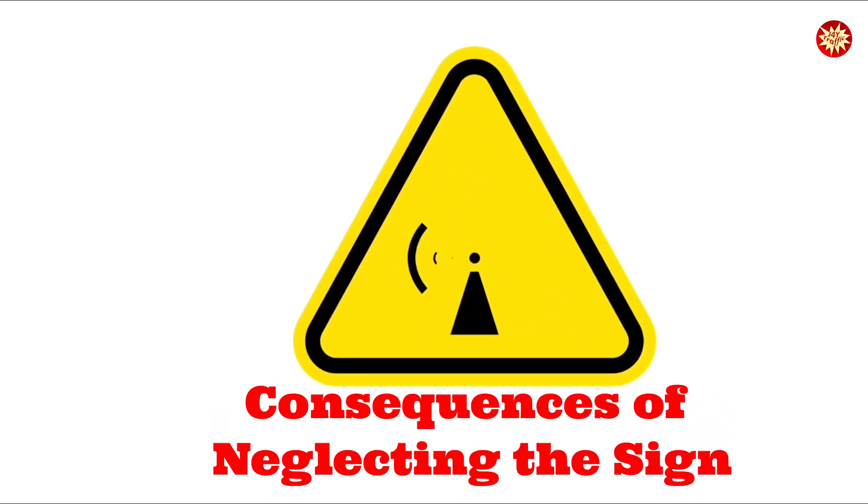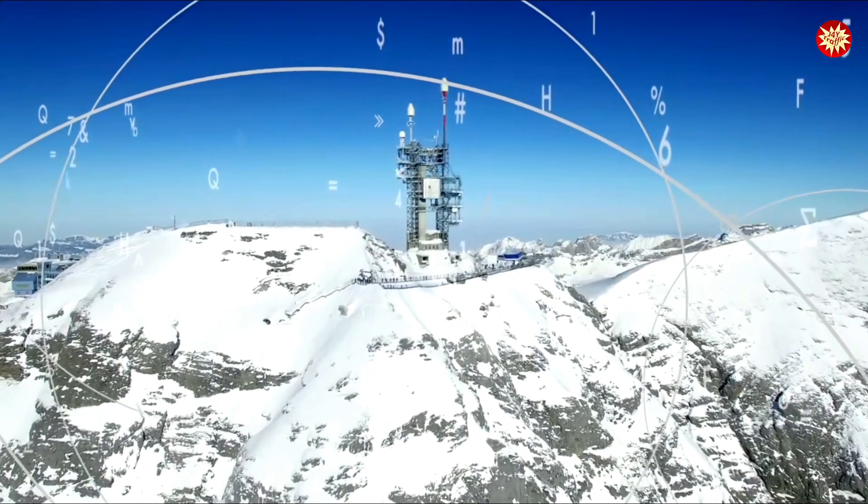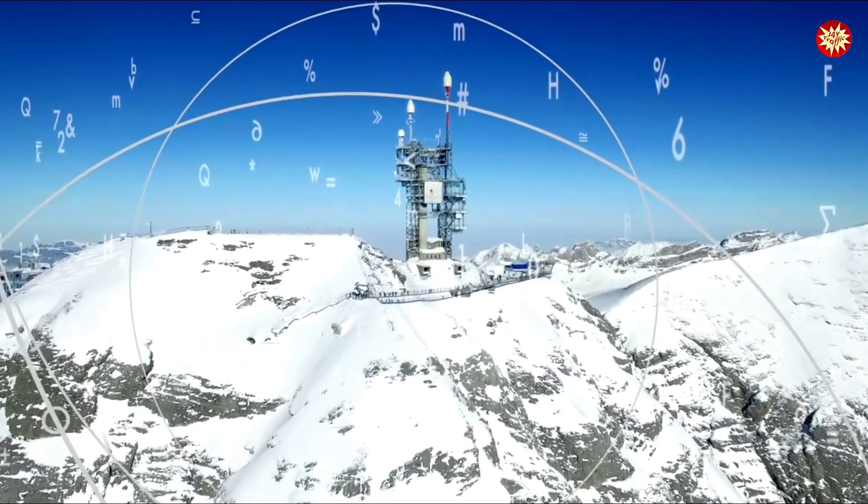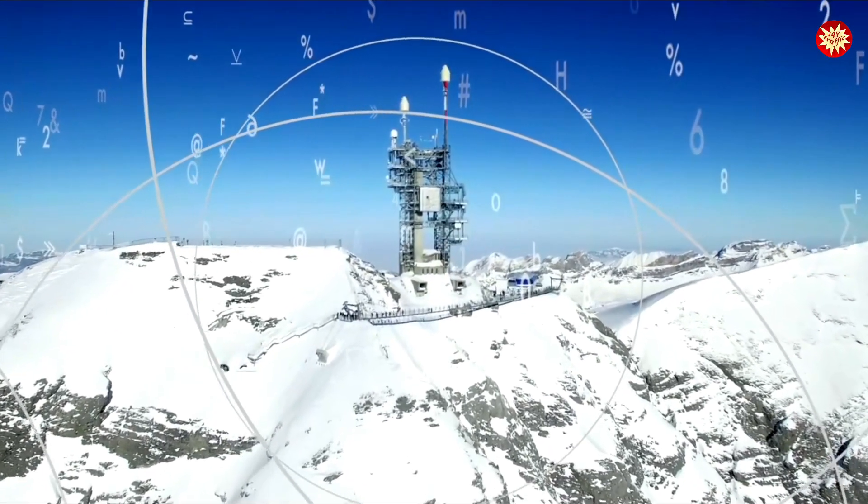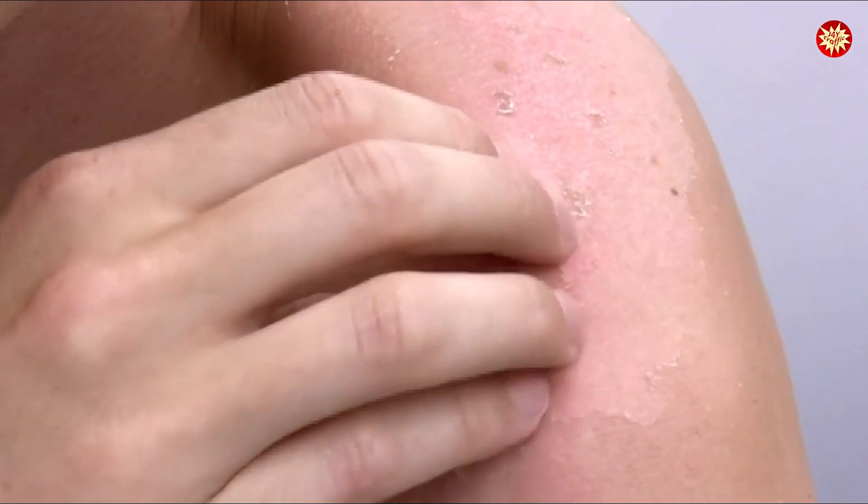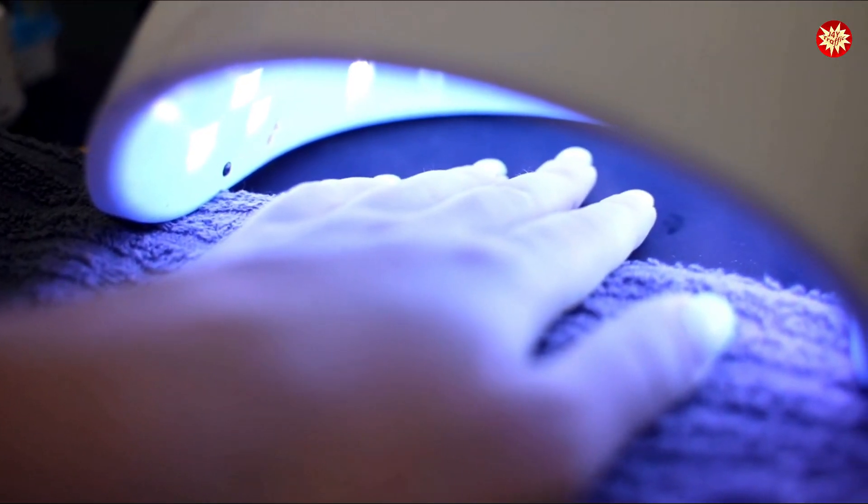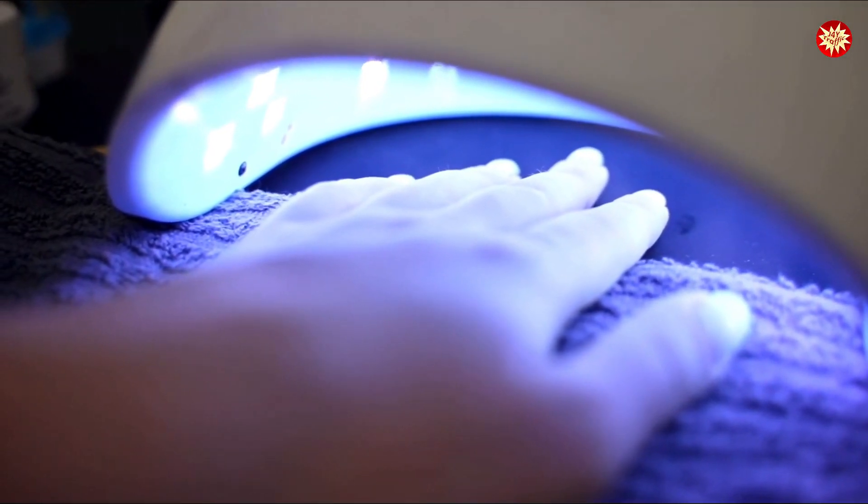Neglecting non-ionizing radiation safety signs can have serious consequences. Exposure to microwaves and RF radiation can lead to burns and tissue damage. UV radiation can harm your eyes, causing conditions like photokeratitis and cataracts. Prolonged UV exposure can also damage your skin, increasing the risk of skin cancer.